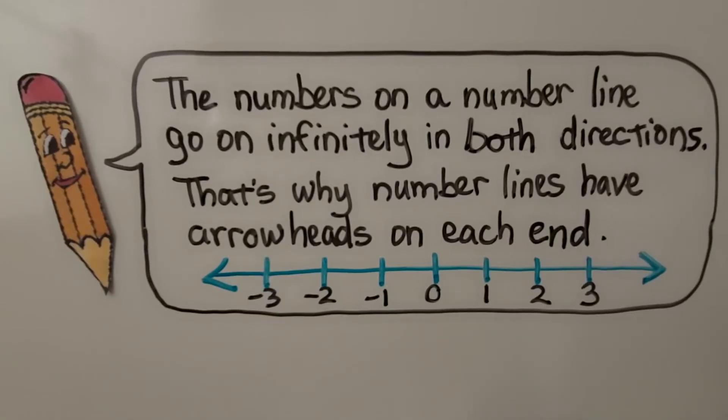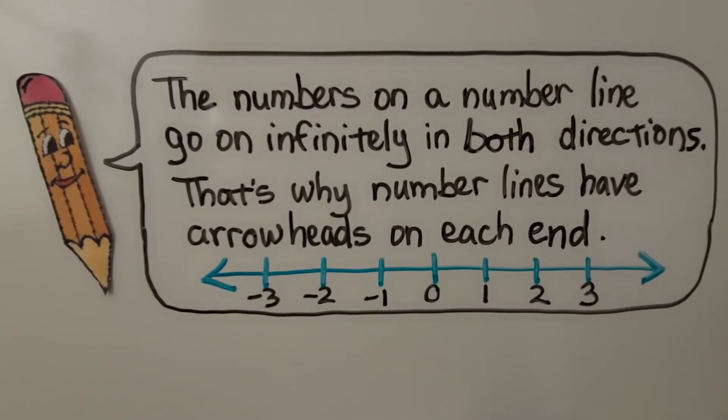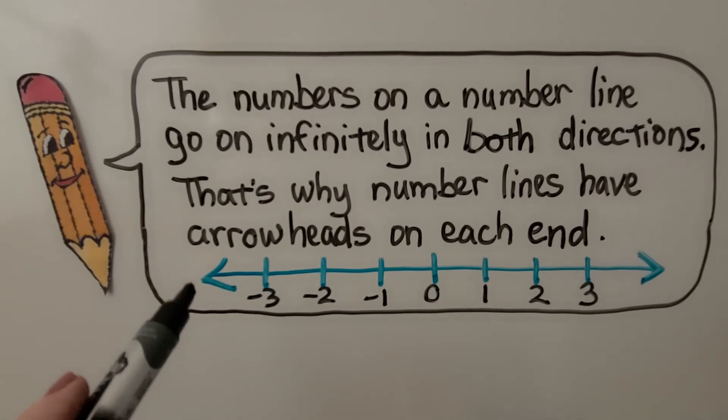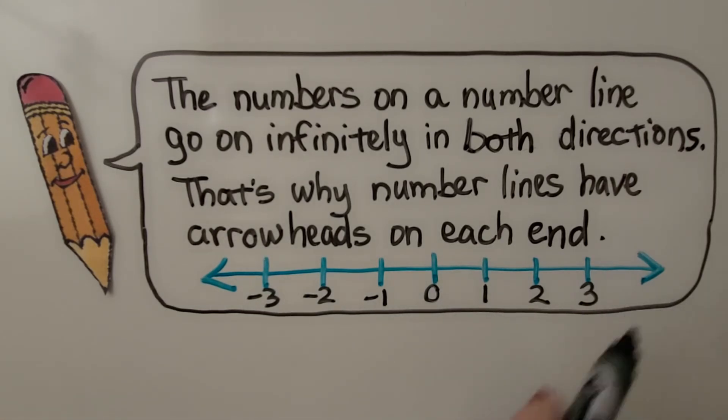The numbers on a number line go on infinitely in both directions. They go on forever in each direction. And that's why number lines have arrowheads on each end. So this could be negative 9 million way over here. And this could be positive 9 million way over here. It could be even more because it goes on infinitely in either direction.